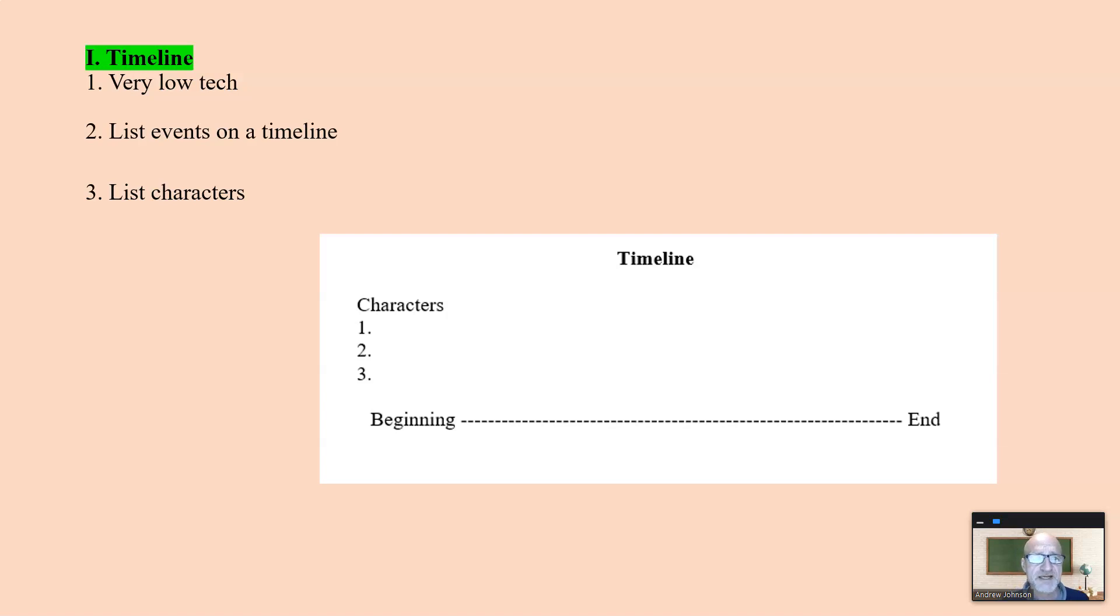Very simple for narrative writing. Low-tech. The timeline. You list events on the timeline, and as you see the events, it reminds you of other events, and characters arise from that. So you list the characters. Very simple. You use that then as a pre-writing activity to create your draft.